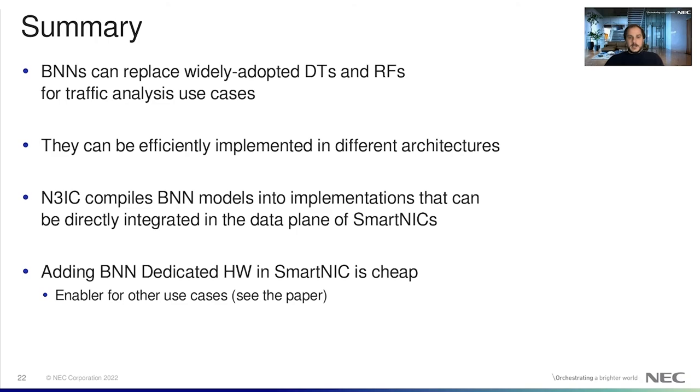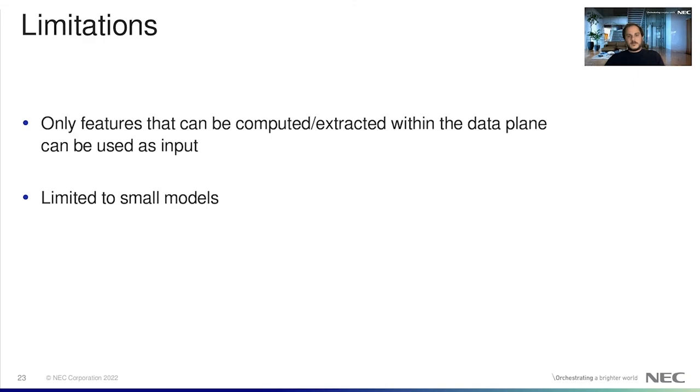In conclusion, BNNs can replace decision trees and random forests for traffic analysis use cases. They can be efficiently implemented in different architectures. NTRIC compiles BNN models into implementations that can be directly integrated in the data plane of commodity SmartNICs. Adding BNN dedicated hardware in SmartNICs comes at low cost. This is enabling for further use cases.